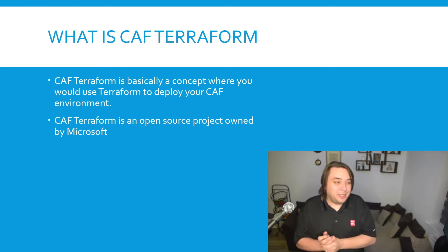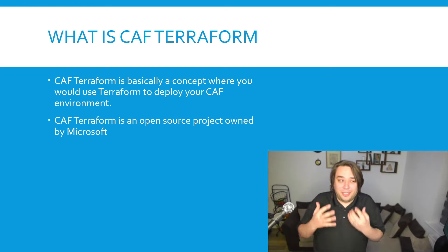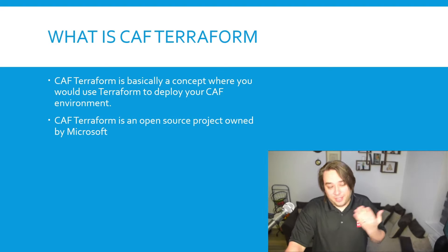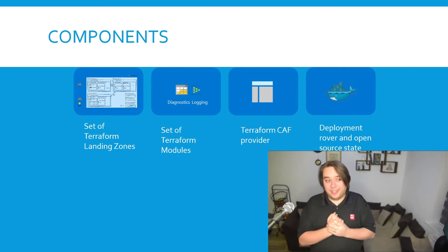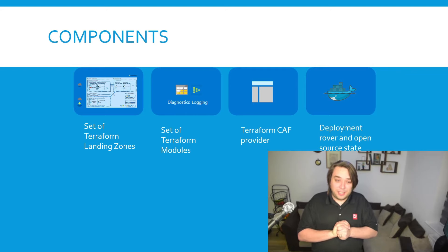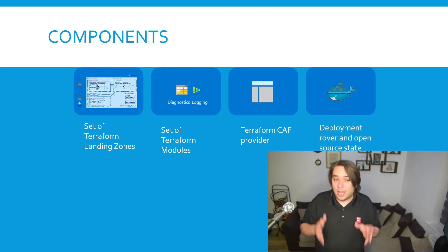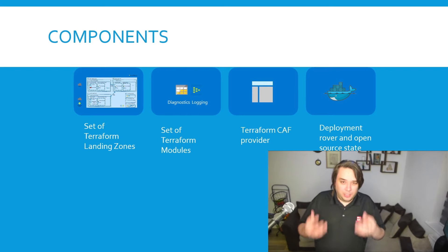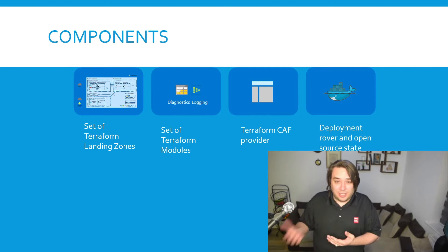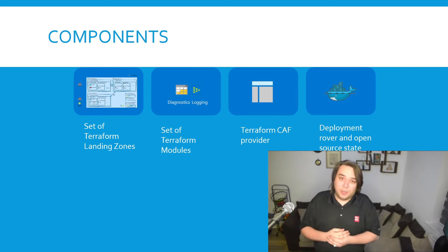CAF Terraform is basically a concept where you use Terraform to deploy your Cloud Adoption Framework environment. It's an open source project by Microsoft. It has a set of Terraform landing zones, a set of Terraform modules, a Terraform CAF provider, and a deployment of an open source state management - I will cover all of that later on. This is an intro; I don't want to get too deep into each section right now. We'll go hands-on with it and I'll explain along the way. This is probably the most theory I will do in the first and second video.